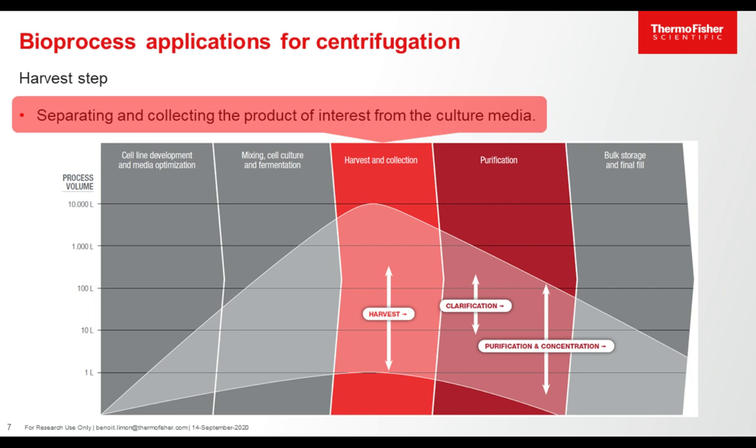In the downstream process, harvest is the separating and collecting of the product of interest from the culture media. The process volume may range from one liter to 10,000 liters, depending on the process scale. The centrifuge may play an important part in the harvest step.